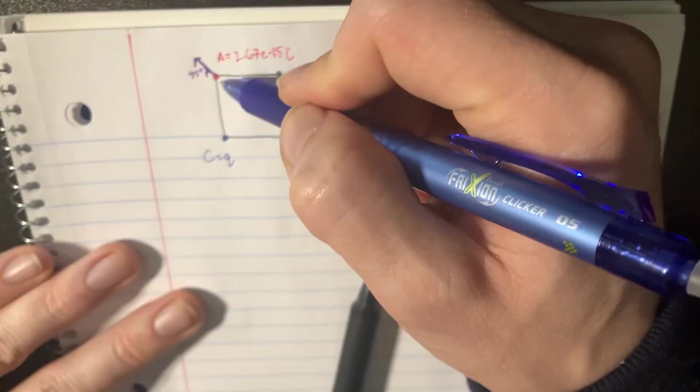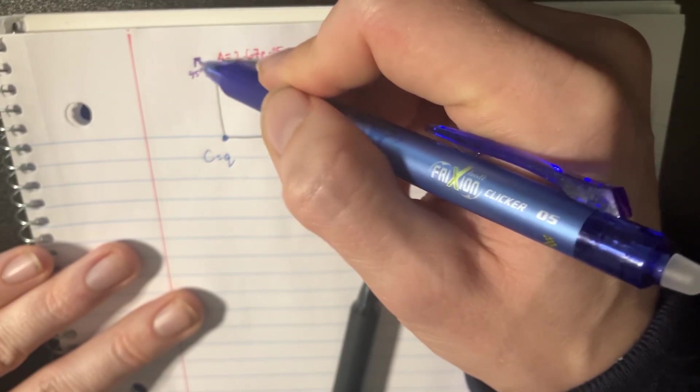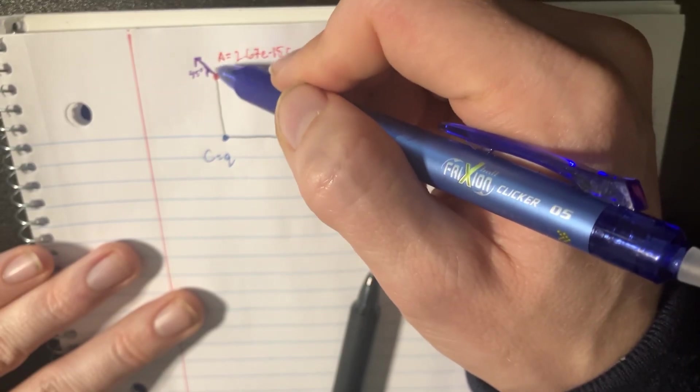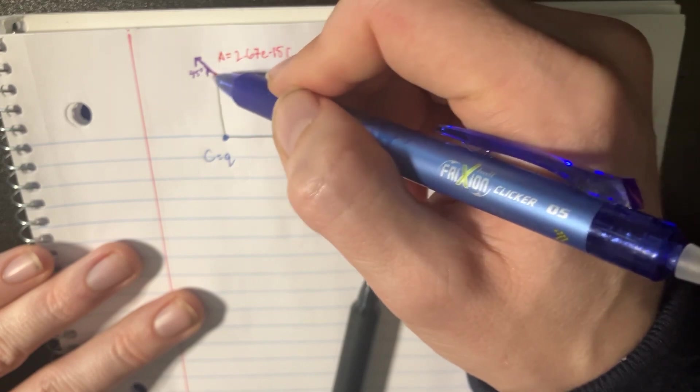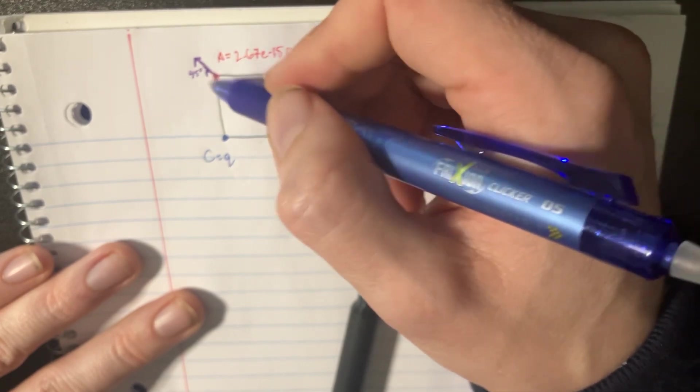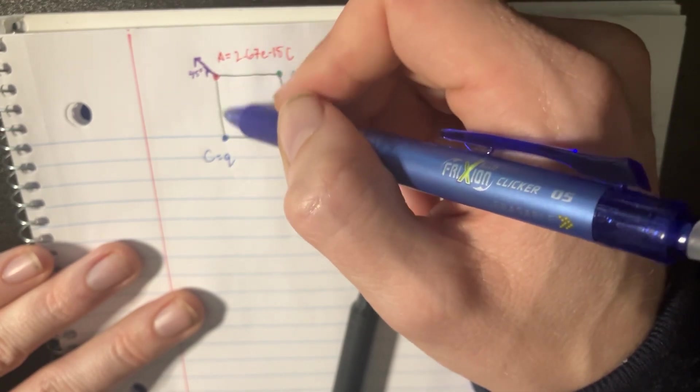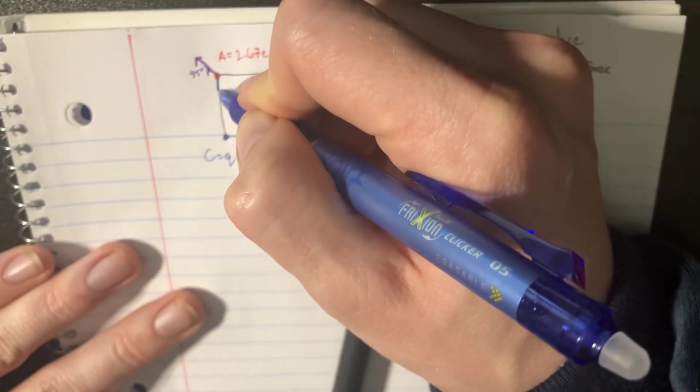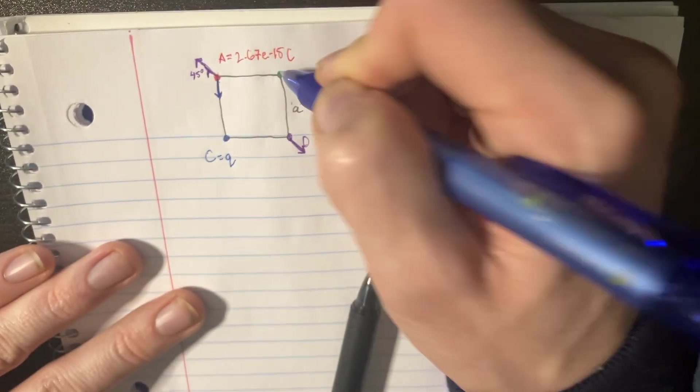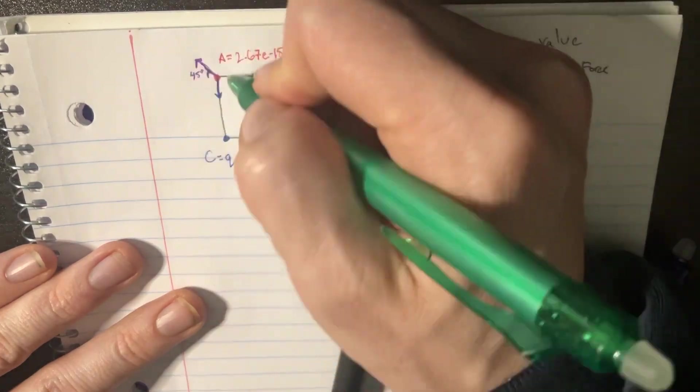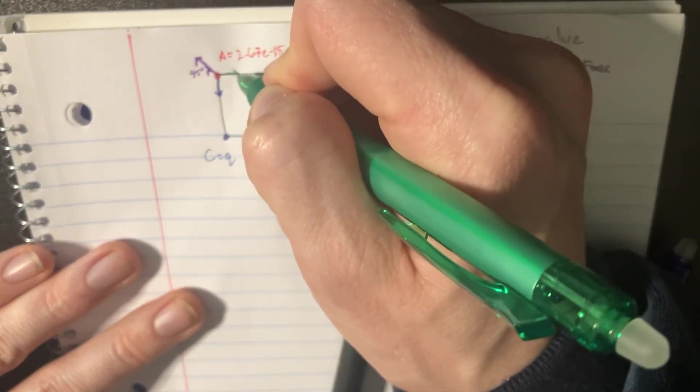Now notice how this arrow is pointing in this direction, which means there's a pull this way and a pull that way. Which means that we need, if we want to make this equal to 0, we're going to need the counterpull. So this is going to be pulling this direction to equalize that side, and this one is going to be pulling in the other direction to equalize that side.